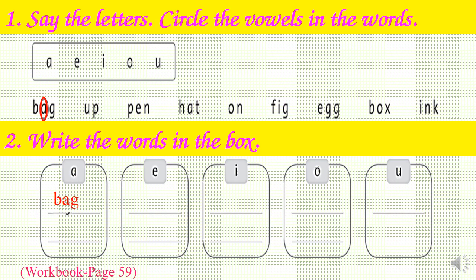Let's go to Exercise 2: Write the words in the box. You have to look at each box of vowels — A, E, I, O, U — and find the words that contain that vowel to complete it. For example, the box of vowel A: I put the word 'bag' because it contains vowel A. Now you do the others. You have two minutes to do it.